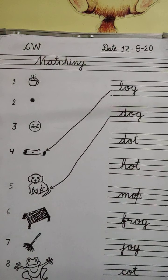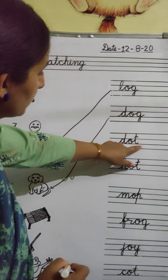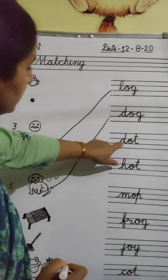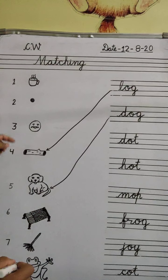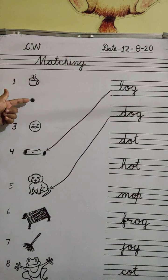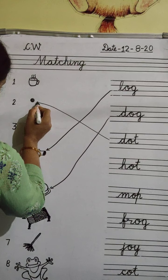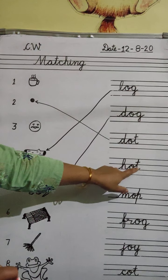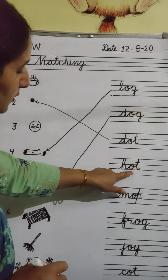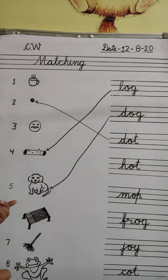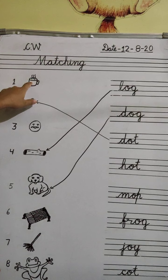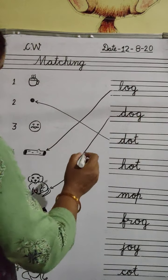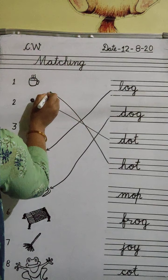Now we will match the spelling with their picture. Next, D-O-T — Dot. Now find the picture of Dot. Yes, this is a Dot. Now we will do matching. Next, H-O-T — Hot. And where is the picture of Hot? Inside the cup is hot tea or coffee. So we will do matching with Hot.